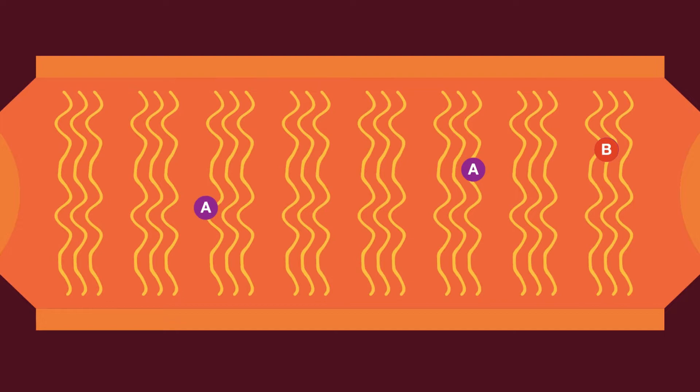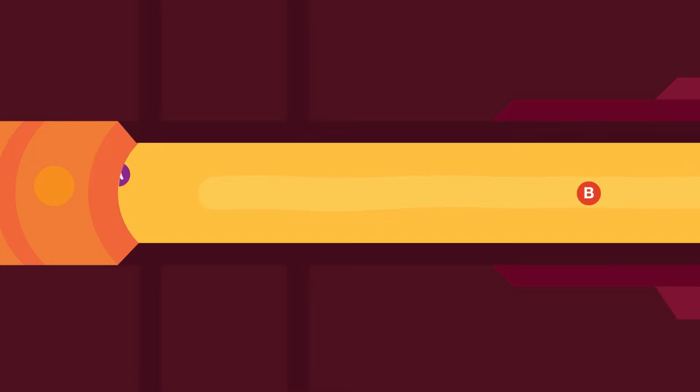In the second step, the state A atoms are exposed to microwave radiation by sending them through a resonator. Due to this radiation, some of the state A atoms shift to state B. A second magnetic field is then fired to eliminate atoms that are still in state A.